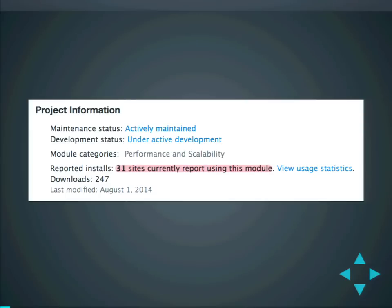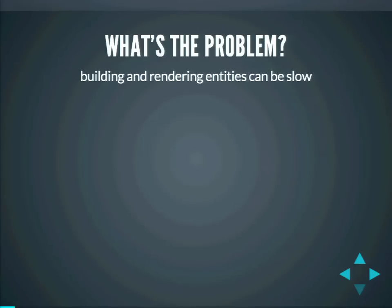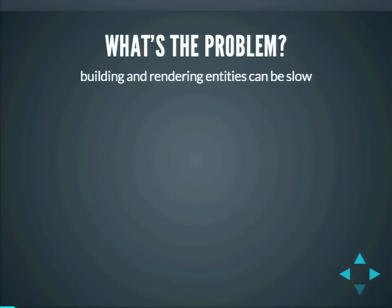We hope that at the end of this session you will take a look at that. So, what is the problem? The problem is that building and rendering entities can be slow. That's not something you generally see at the beginning of a new project. You start seeing this problem when the site gets populated, when there are more entities, especially on pages that show multiple entities. You get a call from your client who says the site feels slow, especially some pages.